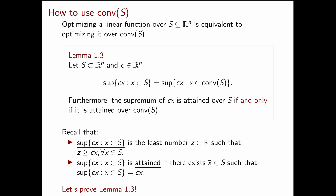Recall that the supremum of Cx subject to x in S is defined as the smallest upper bound on Cx for x in S — the least number z in R such that z is greater than or equal to Cx for every x in S. The supremum is said to be attained if there exists a vector x-bar in S such that the supremum equals Cx-bar. The lemma also states that the supremum of Cx is attained over S if and only if it is attained over the convex hull of S.